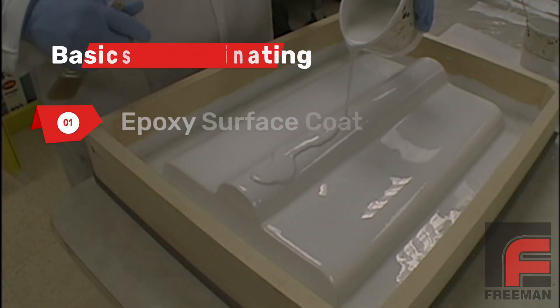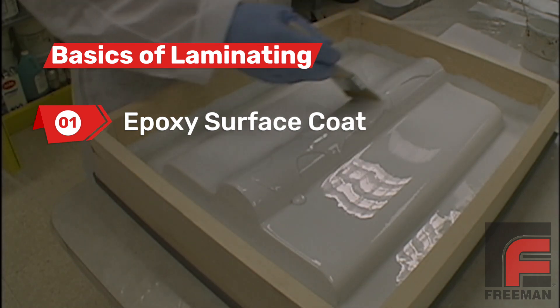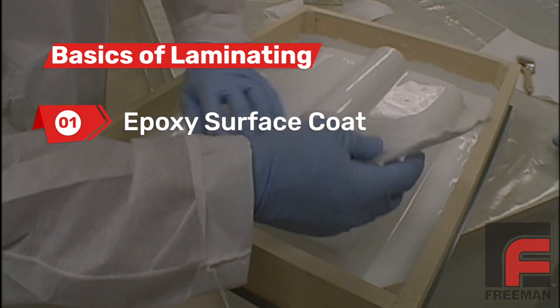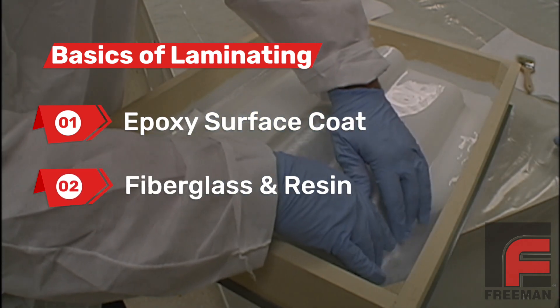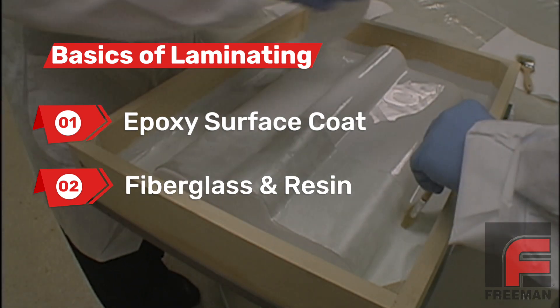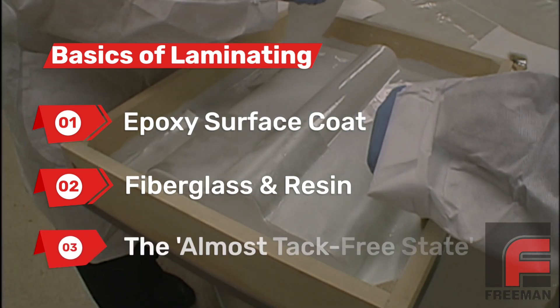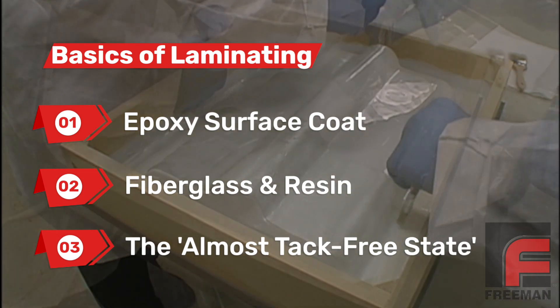The point of this brief video is to show you the basics of laminating. Specifically, applying a surface coat which gives your tool a high quality surface, applying layers of fiberglass cloth and laminating resin which provides the strength and durability of your tool, and most importantly, showing you the almost tack-free state that tells you when your tool is ready for the next step in your process.